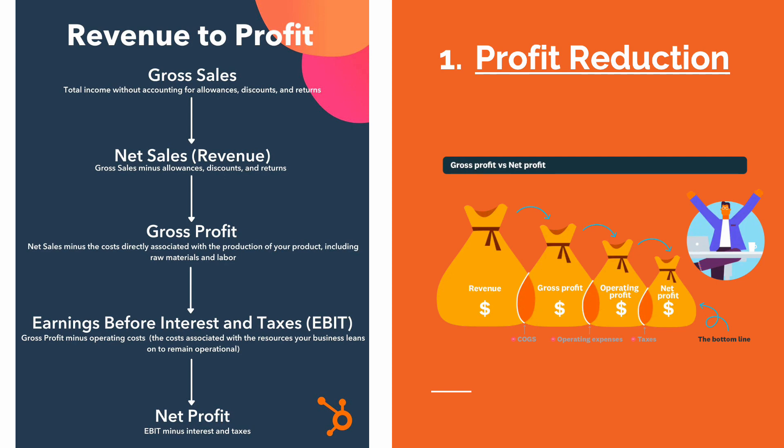There's a lot that we take off to reduce our profit. But it works because the less profit that we show on taxes, the less corporate tax that we have to pay.